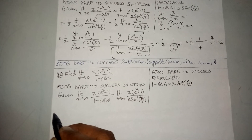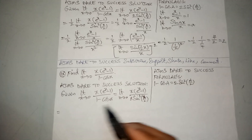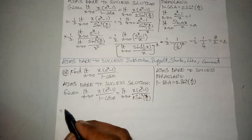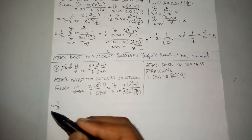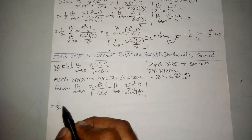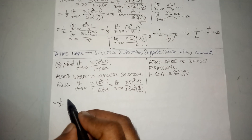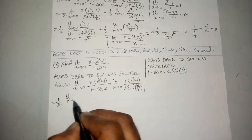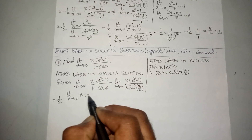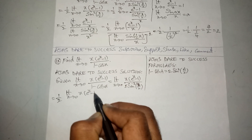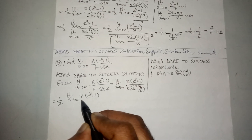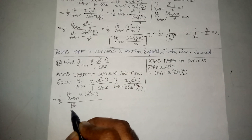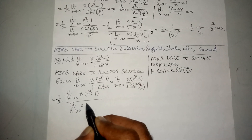Apply limits separately in the numerator and denominator. The 2 is in the denominator and it is a constant — take it outside. We get limit x tends to 0 of x times a to the power x minus 1, divided by limit x tends to 0 of 2 sine squared x by 2.